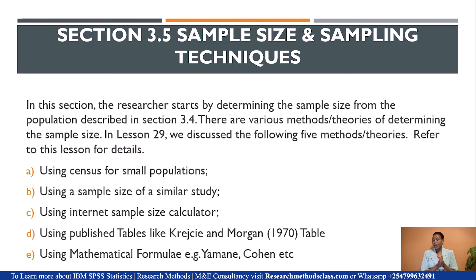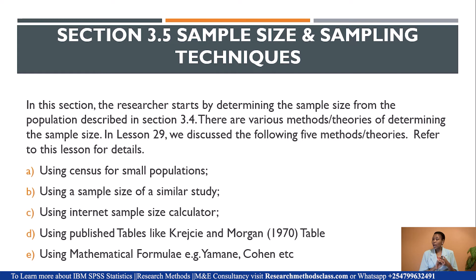In Section 3.5, the researcher starts by determining the sample size from the population described in Section 3.4. There are various theories we discussed in Lesson 29 — five methods for determining sample size: using census for small populations, using a sample size of a similar study, using an internet sample size calculator, using published tables like the Krejcie and Morgan table, or using mathematical formulae like the Yamane and Cohen formulae.